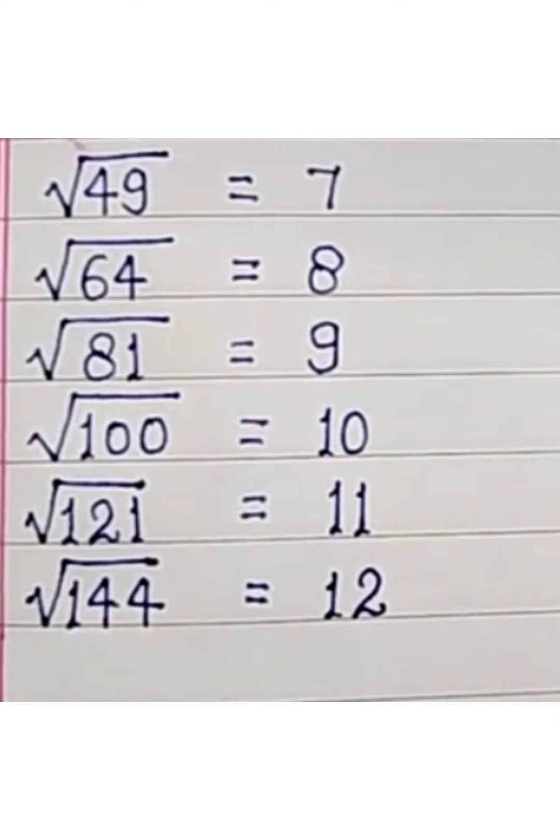7 square root is 49, 8 square root is 64, 9 square root is 81, 10 square root is 100, 11 square root is 121, 12 square root is 144.